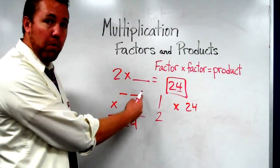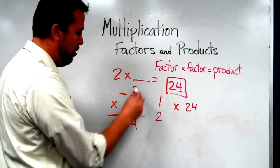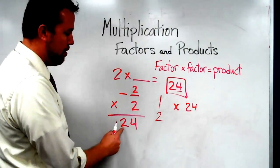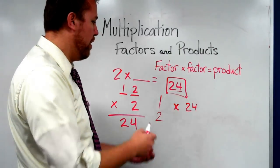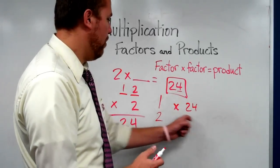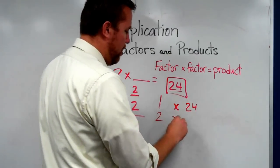Well, 2 times what equals 4? 2. And then 2 times what equals 2? 1. And we just fill in the blanks in the algorithm. Anyway, 1 times 24, and now we know 2 times 12.